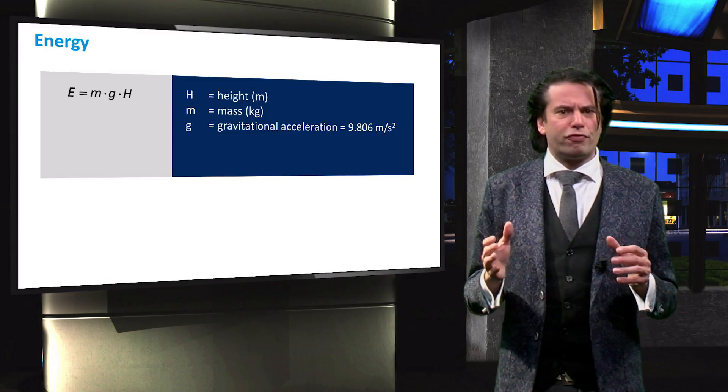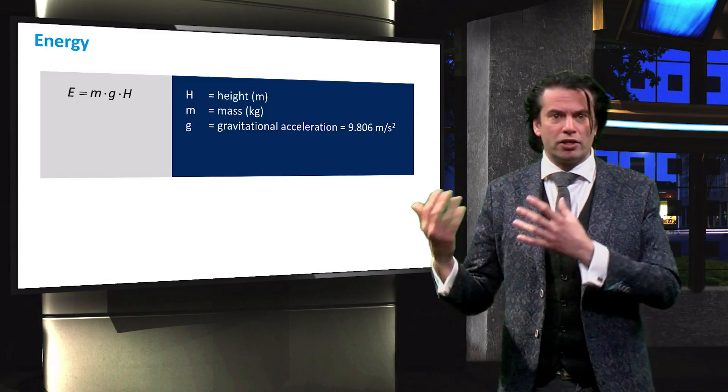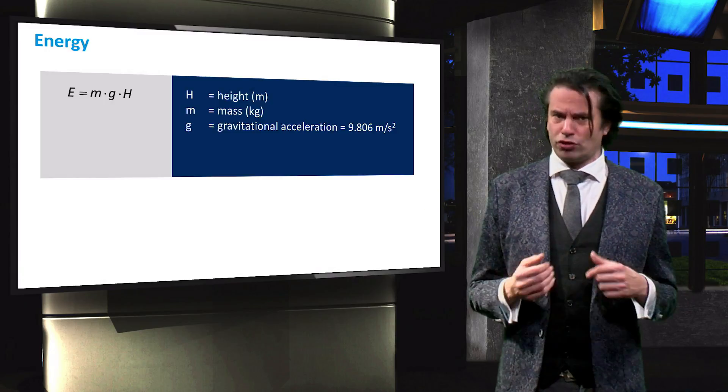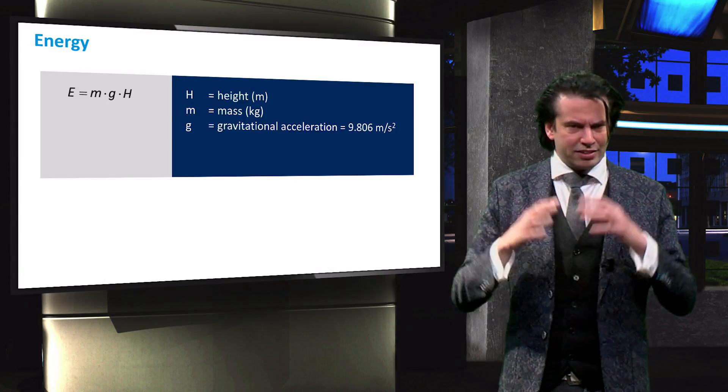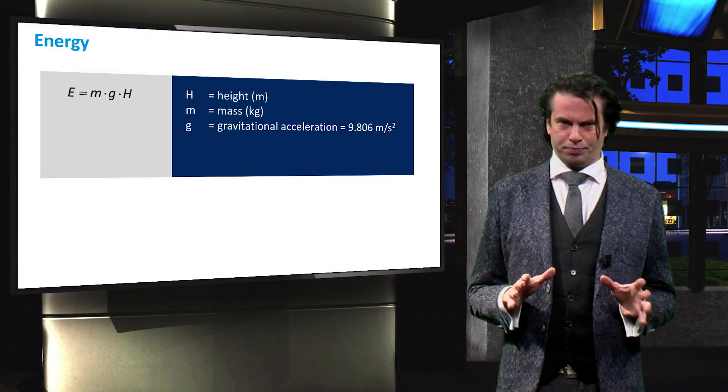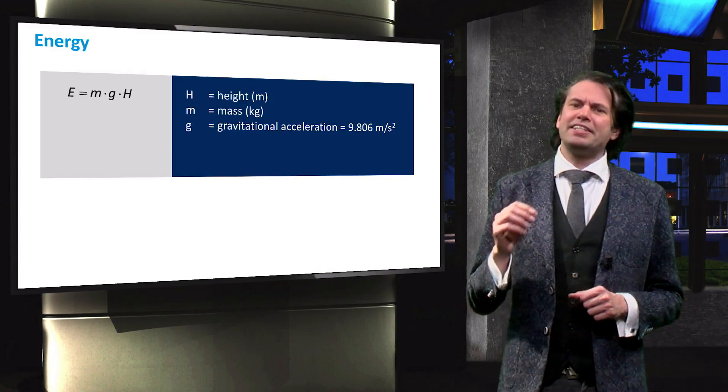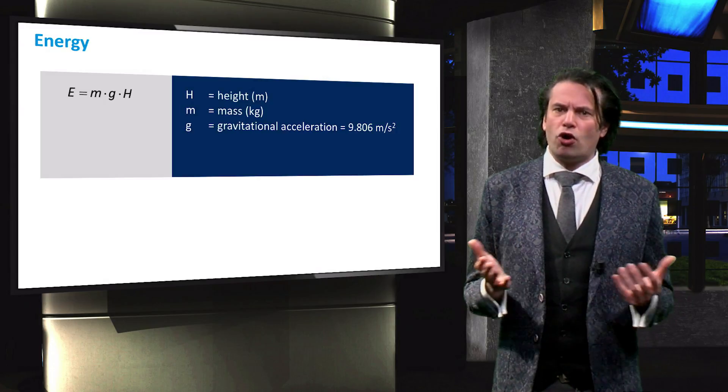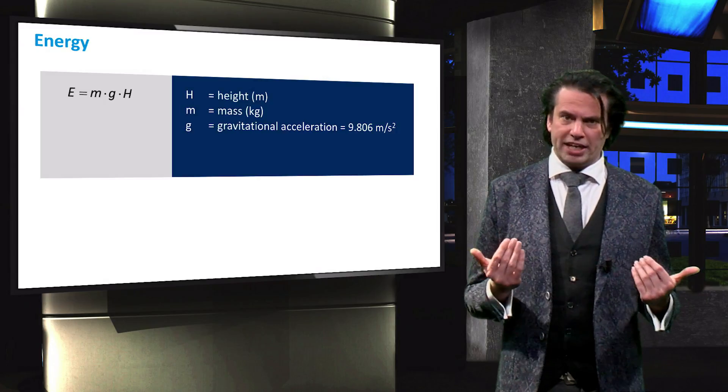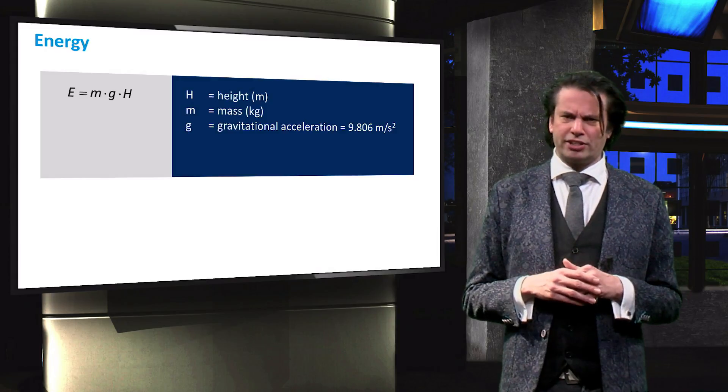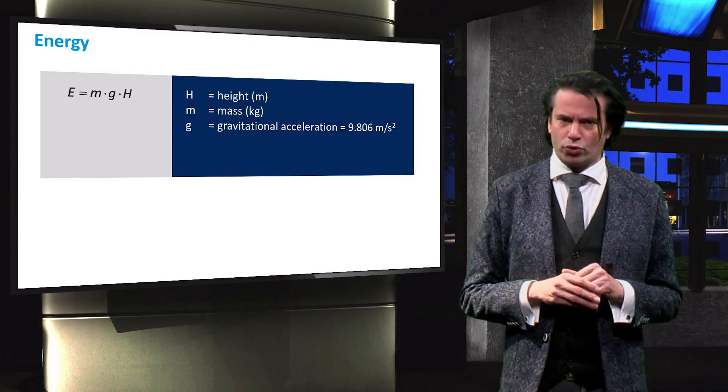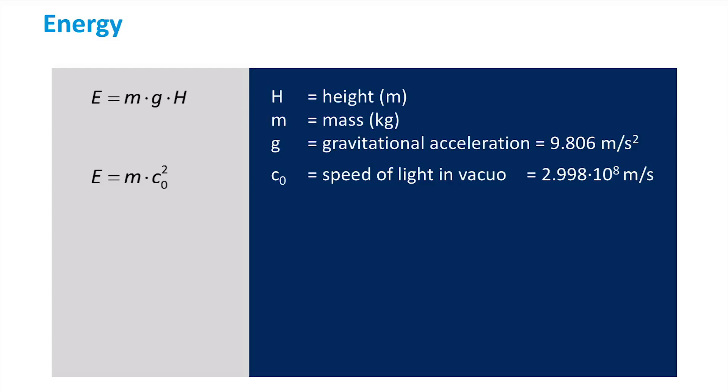Energy can be converted from one form to another, and all these manifestations of energy that we can observe are related to the great physical constants that define our universe. We have related energy to the mass of an object and the height of that object with respect to the surface of the earth, through the gravitational acceleration, which is derived from the gravitational constant.